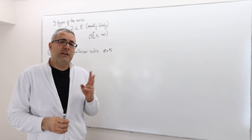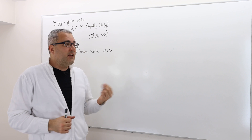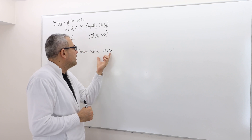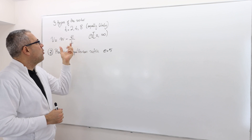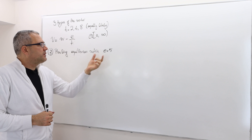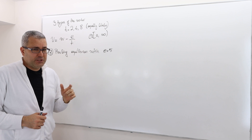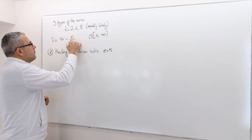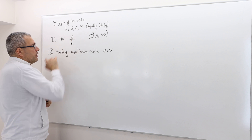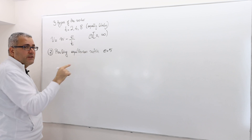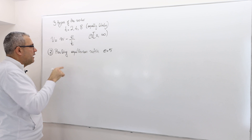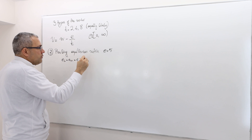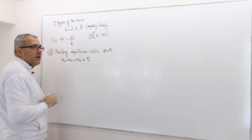The second part of the question is asking if there is a pooling equilibrium where all three agents choose the same education level, which is 5. In a pooling equilibrium where E equals 5 — meaning E_L equals E_M equals E_H equals 5.